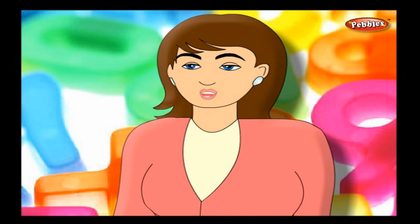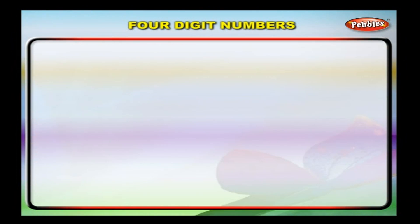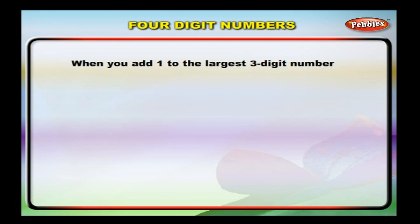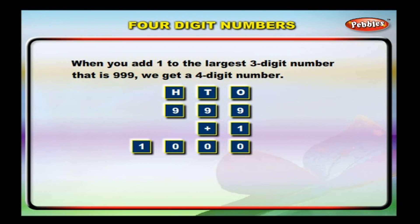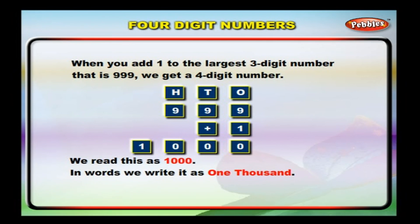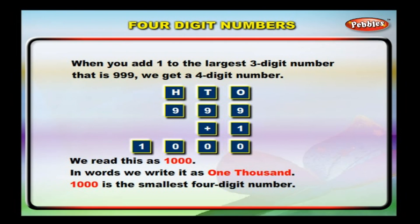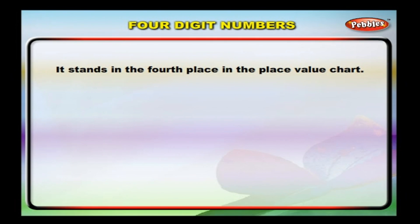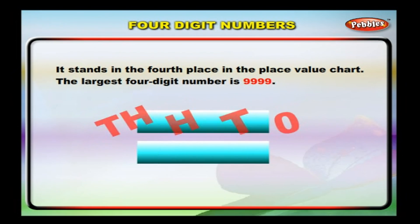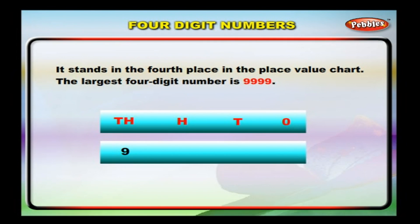Now, let us know about four-digit numbers. When you add one to the largest three-digit number, that is 999, we get a four-digit number. We read this as 1000. 1000 is the smallest four-digit number. It stands in the fourth place in the place value chart. The largest four-digit number is 9999.